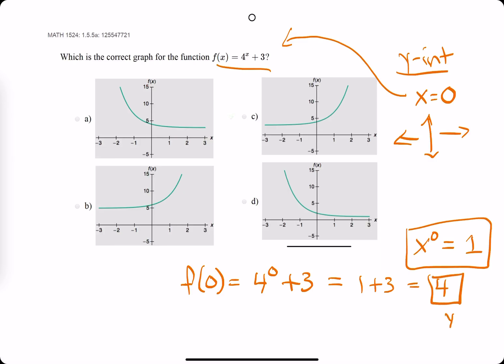So this must be our y-intercept for the correct function. If we look at option a, possibly looking pretty good. Look at c, that's looking pretty good.